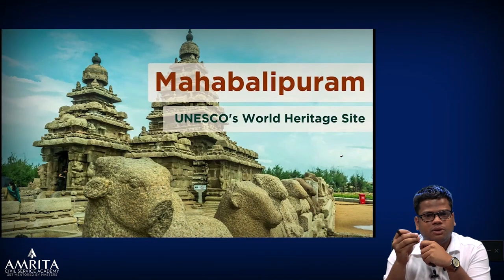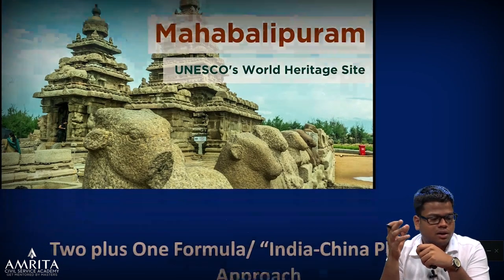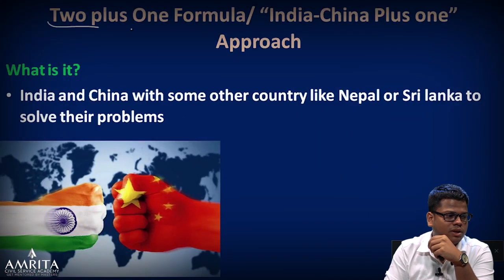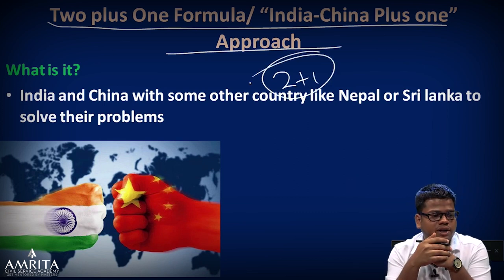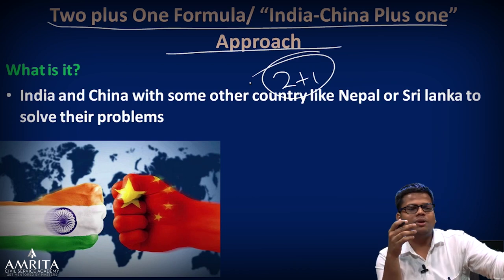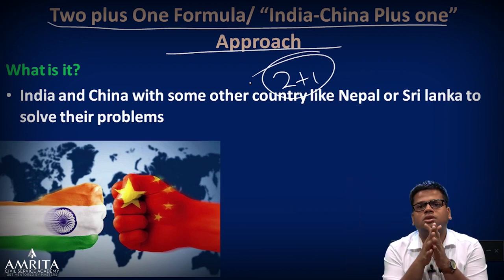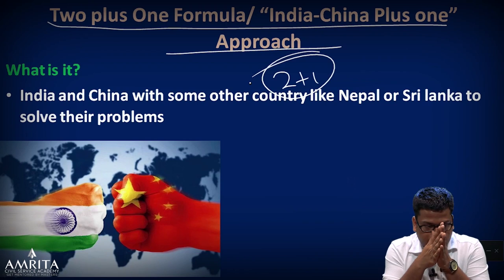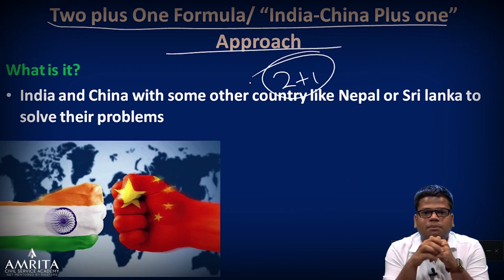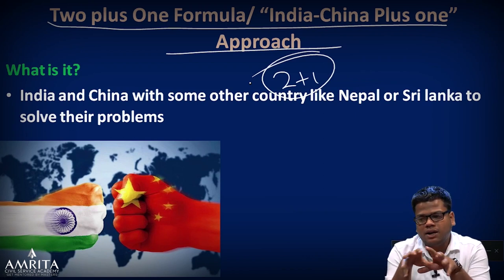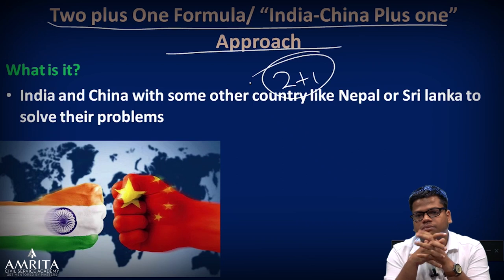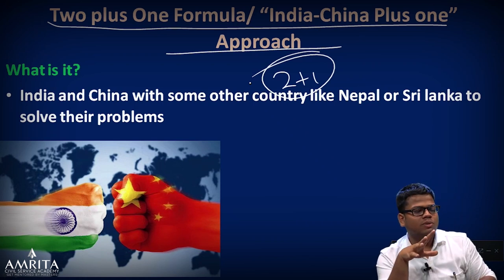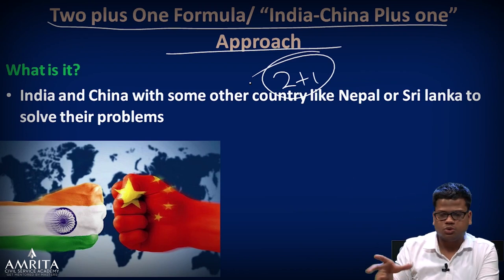The Trans-Himalayan Multi-Dimensional Connectivity project will help China make inroads into Nepal, as Nepal also wants an independent foreign policy not overly dependent on India. China will help Nepal build a dry port at Tatopani and roads from Nepal to China. Nepal is a landlocked country. China is also building roads, highways, and airports in Nepal. The famous quote applies: 'India promises and China delivers' — India has promised much but cannot deliver, so countries like Nepal turn to China.